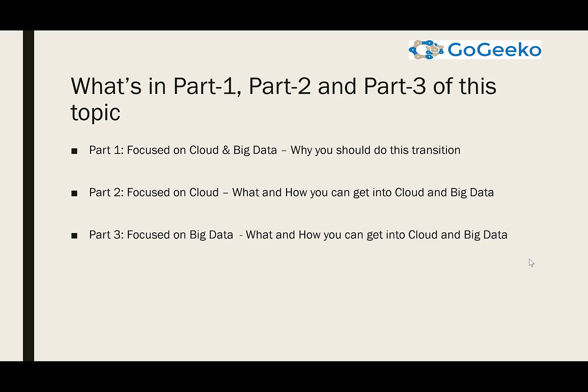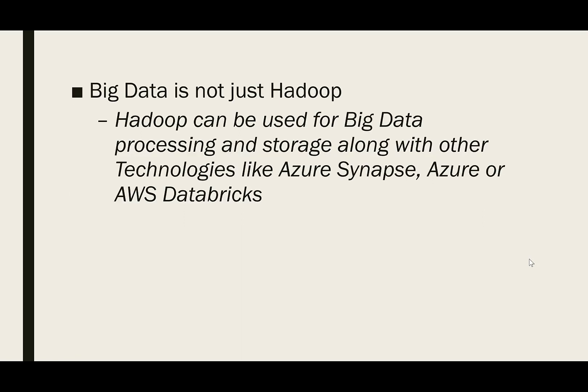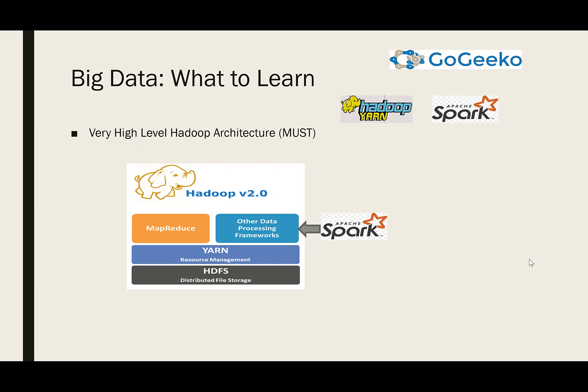Big data is not just Hadoop. Hadoop can be used for big data processing and storage along with other technologies, which are mostly cloud technologies like Azure Synapse, Azure, AWS, Databricks, and many others. Keep in mind that big data doesn't just mean Hadoop, but Hadoop is important in terms of big data. A lot of cloud technologies are replacing Hadoop in many cases, but Hadoop still has its own market.